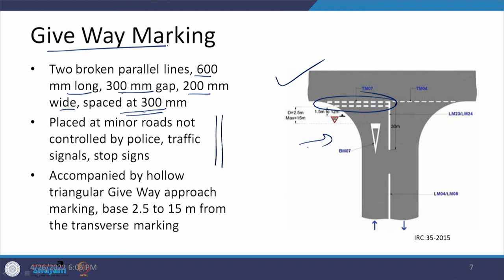An inverted triangle is also provided as part of the give way marking, defining the give way condition. This is placed at a similar distance of 2.5 to 15 meters from the nearest edge of the give way marking. A road sign is placed at 1.5 meters to 12 meters from those give way markings near the edge.